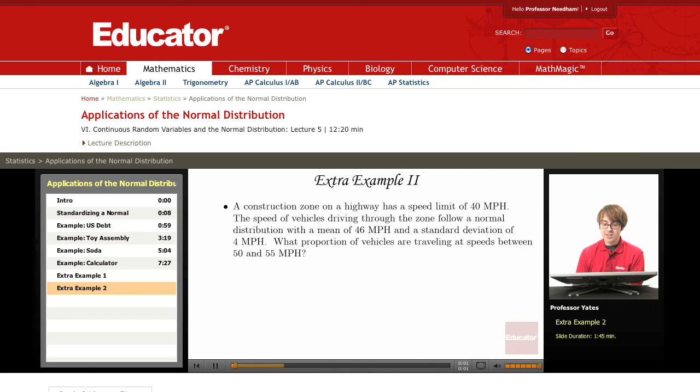A construction zone on a highway has a speed limit of 40 miles per hour. The speed of vehicles driving through the zone follow a normal distribution with a mean of 46, so μ equals 46, and a standard deviation of 4, so σ equals 4.